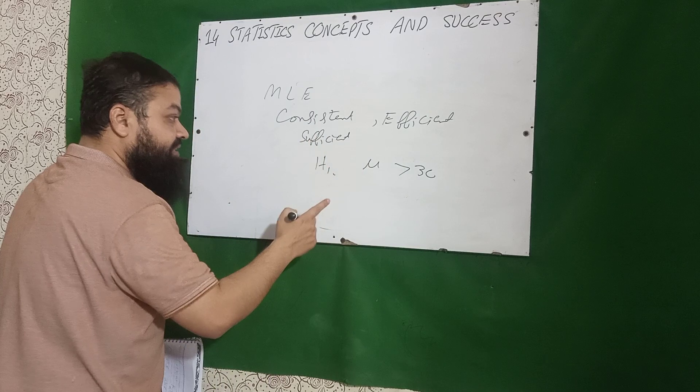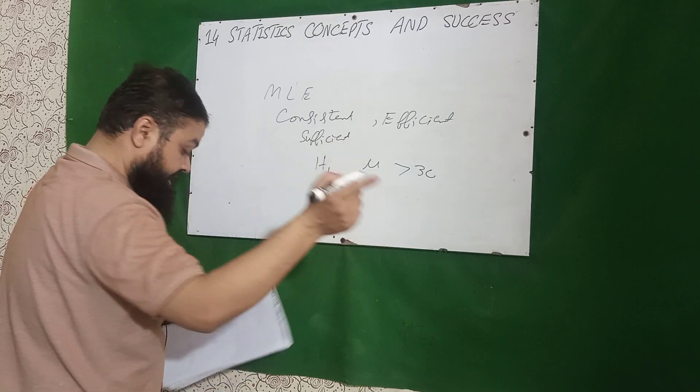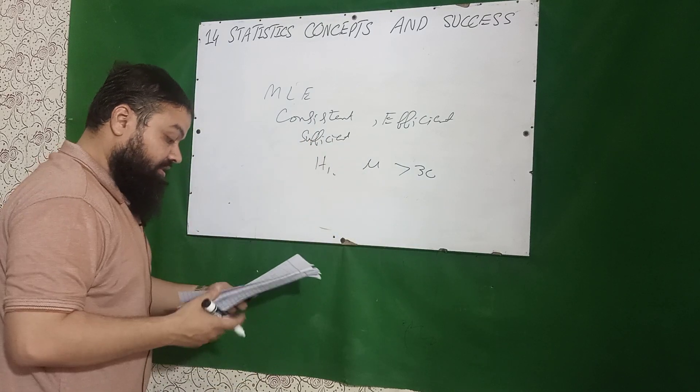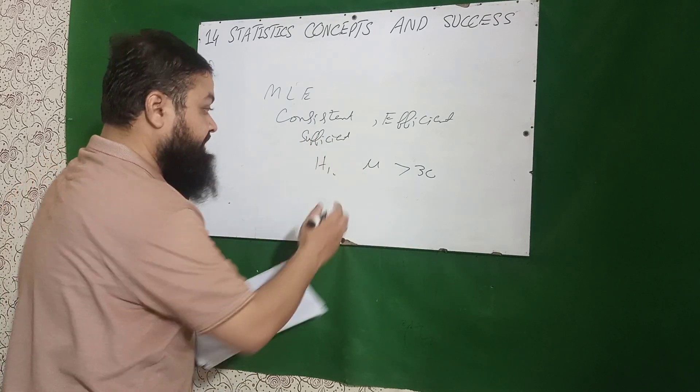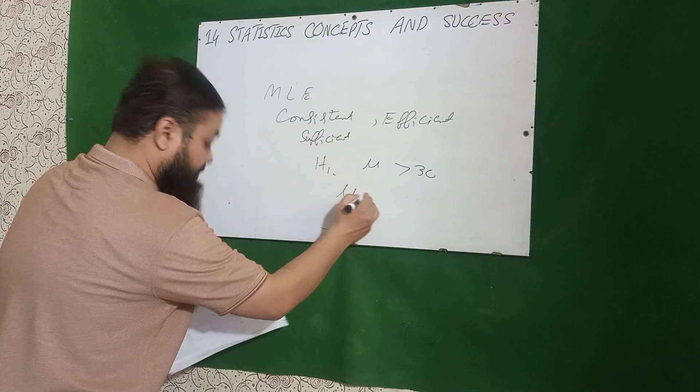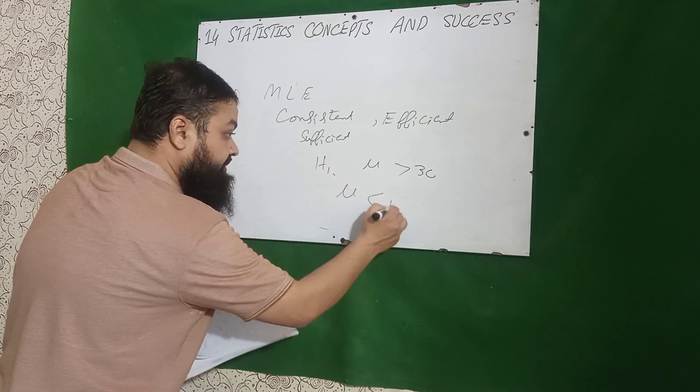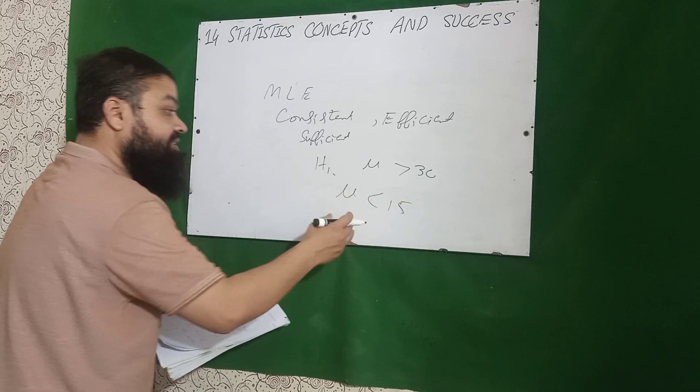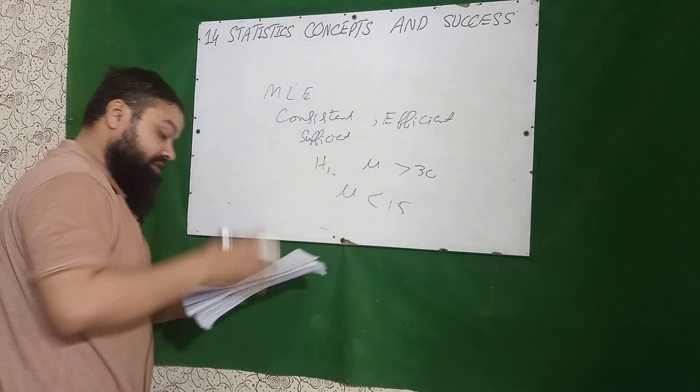If H1 is given as mu greater than 30, it is a one-tailed test to the right side — a right-tailed test. If H1 is mu less than 15, it is a one-tailed left-tailed test.